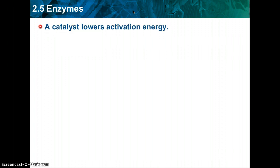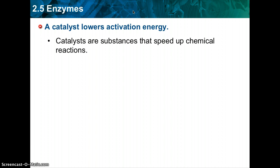Some chemical reactions that make life possible are too slow, or have activation energies that are too high to make them practical for living tissues. These chemical reactions are made possible by a catalyst. A catalyst is a substance that speeds up the rate of a chemical reaction, essentially by lowering the reaction's activation energy.